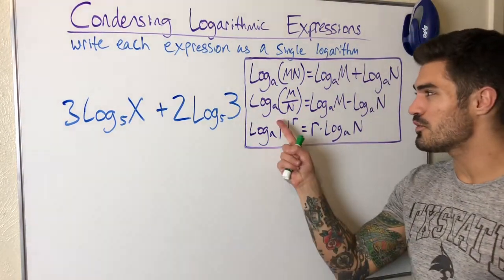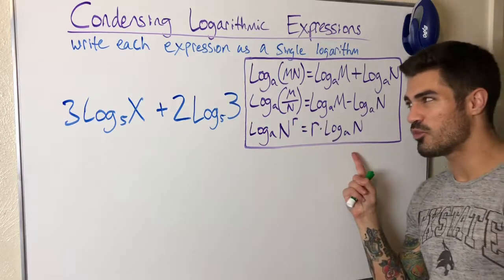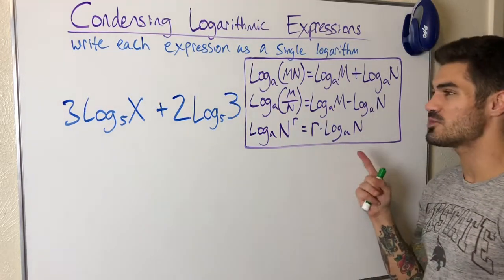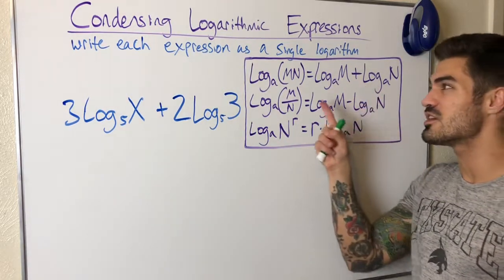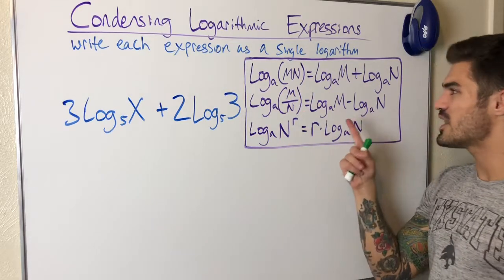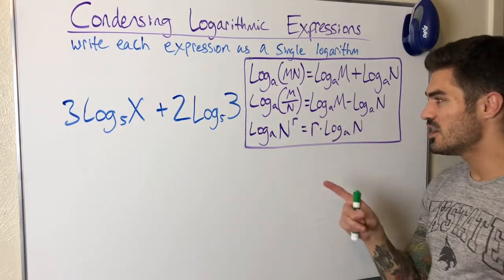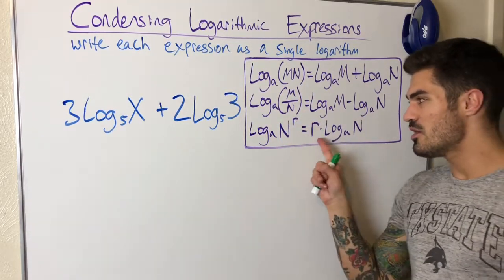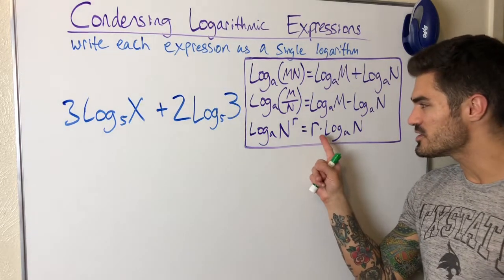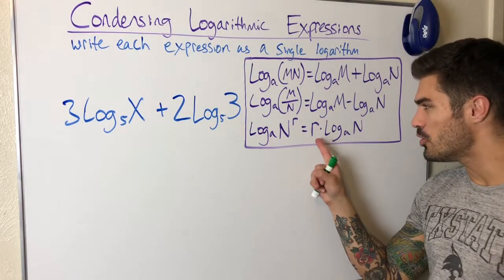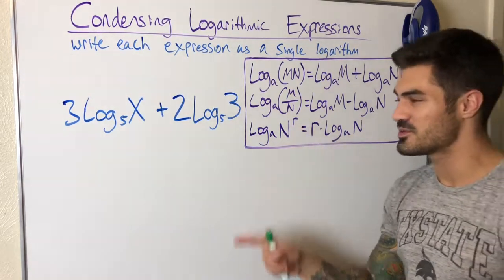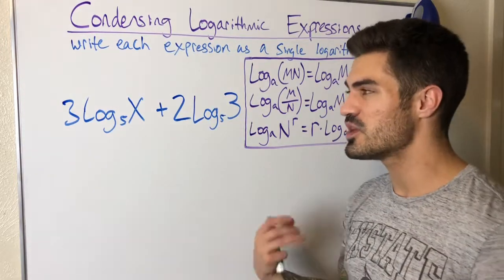Instead of going from left to right, we're going from right to left using these properties. So I'm taking addition and turning it into multiplication, subtraction is turning into division, and I'm taking things being multiplied out in front — some number being multiplied in front — and rewriting it as an exponent. We're doing the opposite of expanding.